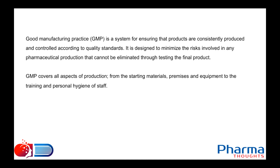GMP covers all aspects of production — from the starting materials, premises, and equipment to the training and personal hygiene of staff. GMP is a system to ensure that manufacturing production is consistent and meets quality standards.